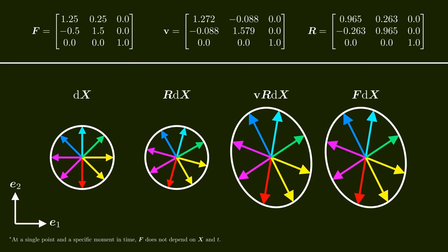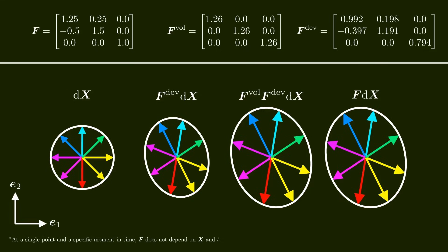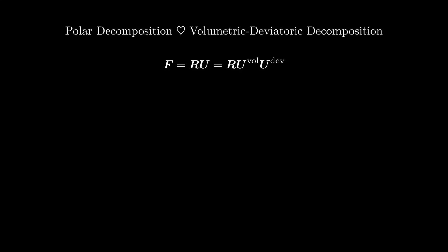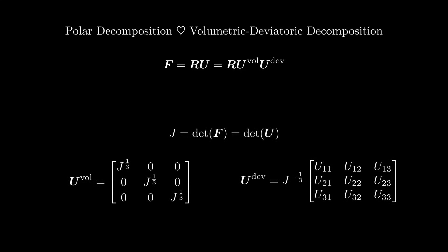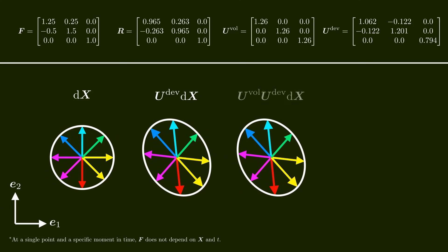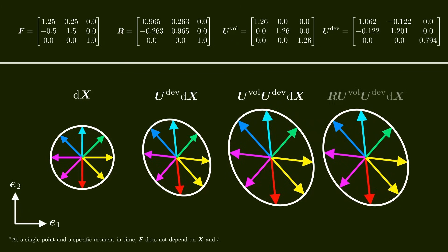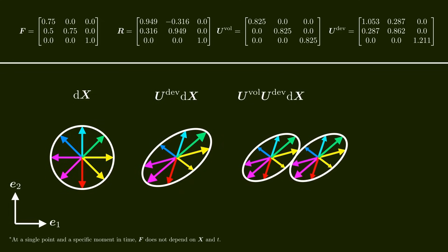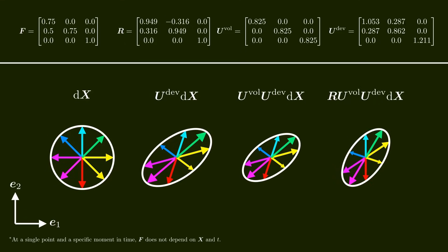Let's recap. We can use the volumetric-deviatoric decomposition to decompose the deformation gradient into a volume-changing and a shape-changing contribution. And we can use the polar decomposition to decompose the deformation gradient into its rotating and deforming contributions. Both decompositions increase our geometric and physical understanding of the deformation gradient. What's nice is that they can be combined: we can first apply the polar decomposition and then use the volumetric-deviatoric decomposition to decompose U into its volumetric and deviatoric parts — giving us three matrices: U_def for pure shape change, U_vol for pure volume change, and R for pure rotation. Thanks for watching and stay tuned.